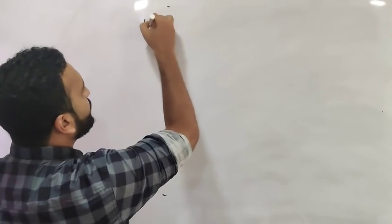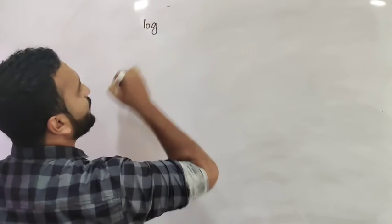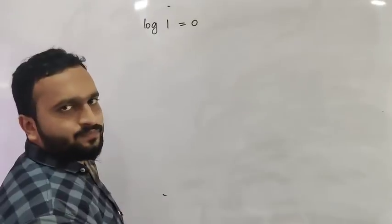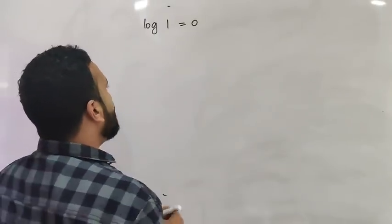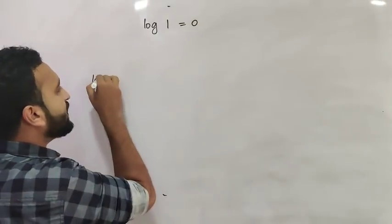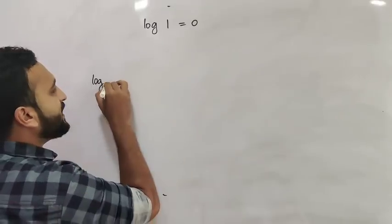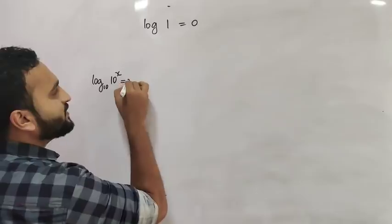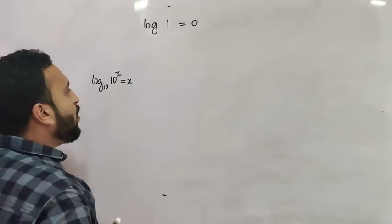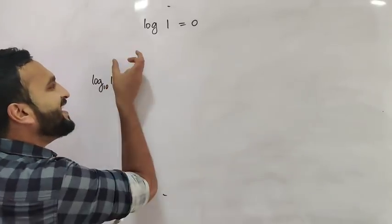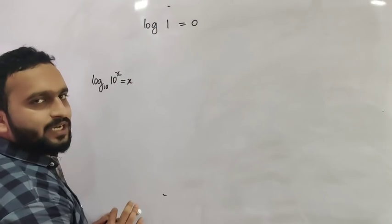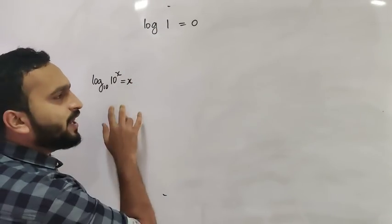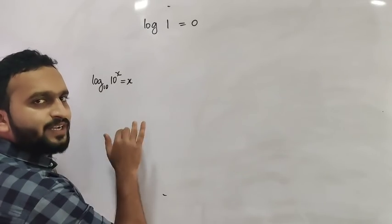First of all, log of 1 is 0. Log to the base 10 of 10 raised to x is x. So log of 10² is 2, log of 100 is 2, log of 1000 is 3, and log of 10,000 will be 4.